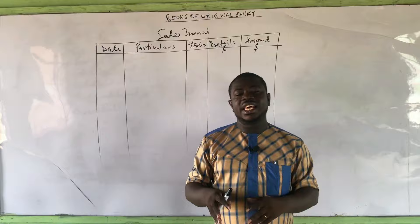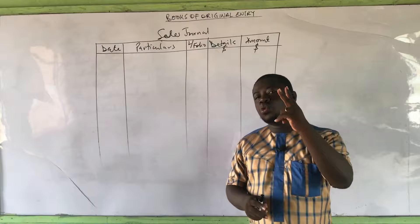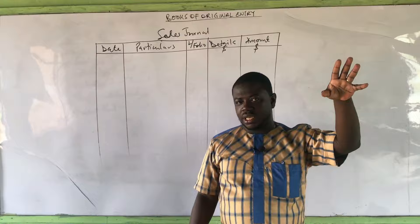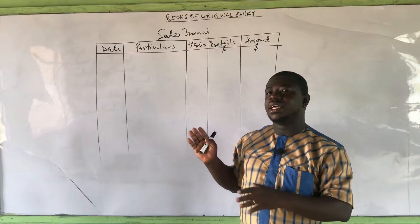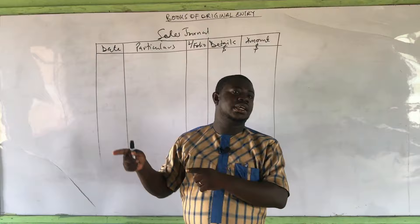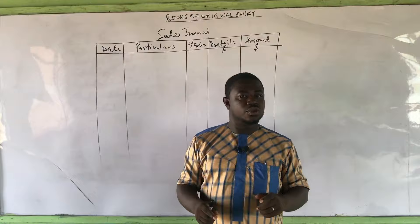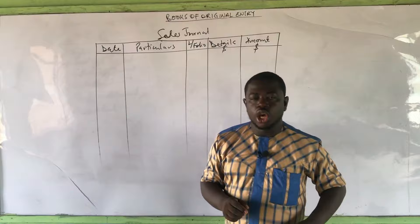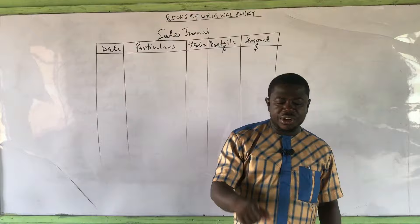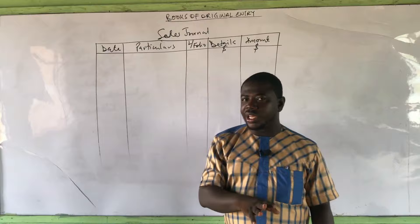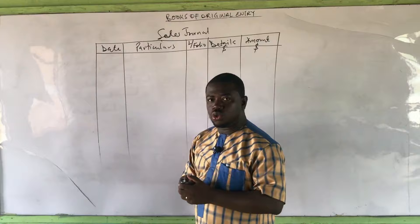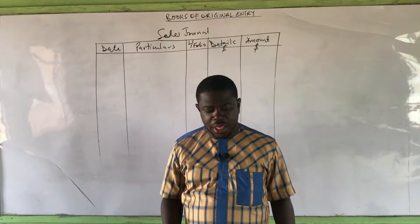The discount in these day books is not a cash discount — it is a trade discount. Cash discounts will appear in the ledgers. There are two main types of discounts: trade discount and cash discount. In the cash discount category we have discount allowed and discount received. When it comes to the day books it is the trade discount that applies; cash discounts do not apply here. So when solving a question, if you see trade discounts apply them, but if you see cash discounts, ignore them here.